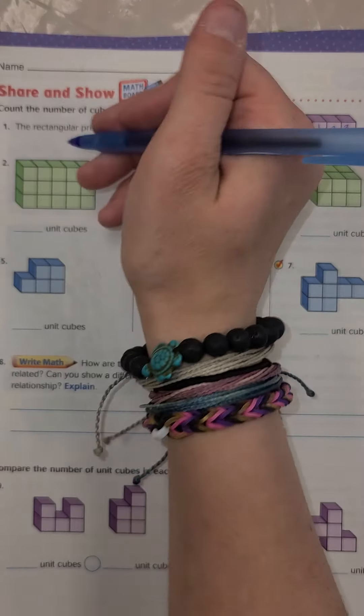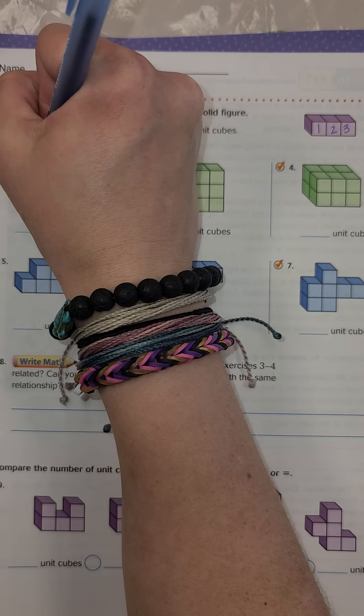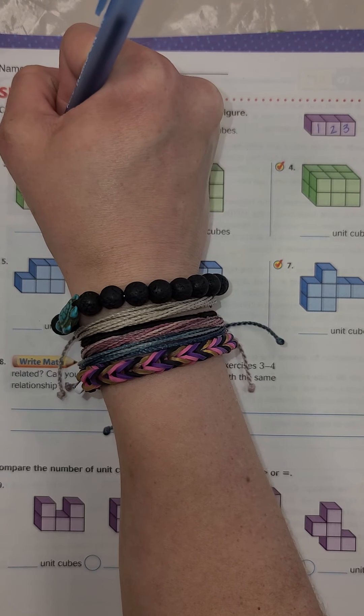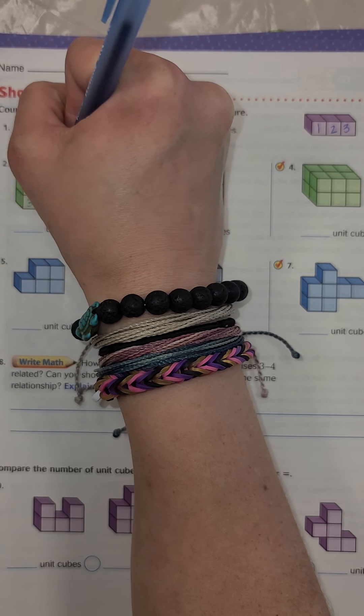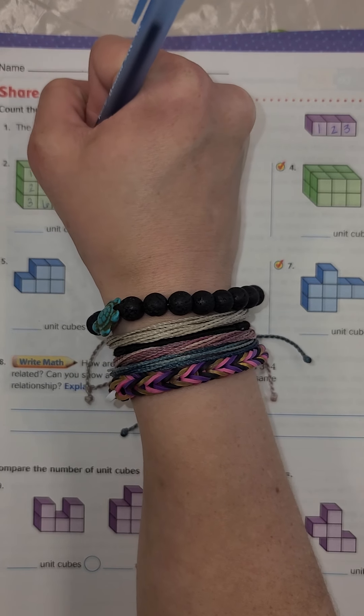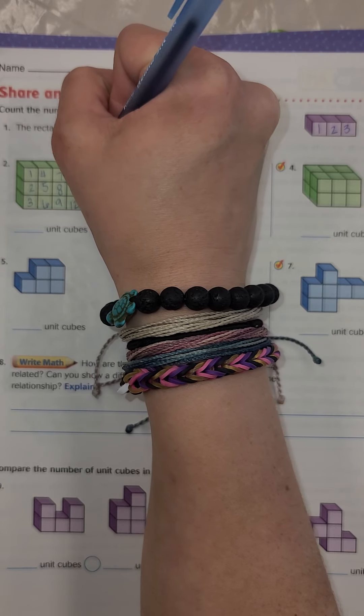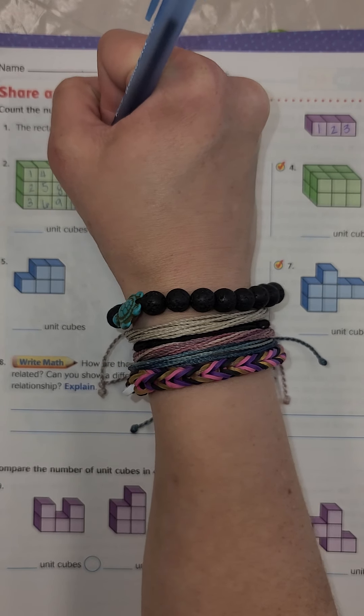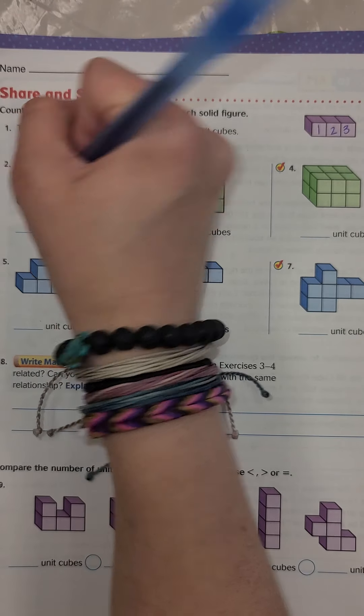If you look at this one, let's keep going. We have one, two, three, four, five, six, seven, eight, nine, 10, 11, 12, 13, 14, 15. So there are 15 unit cubes.